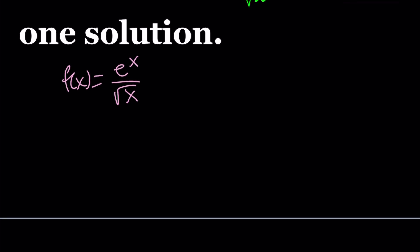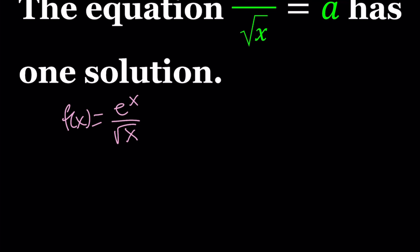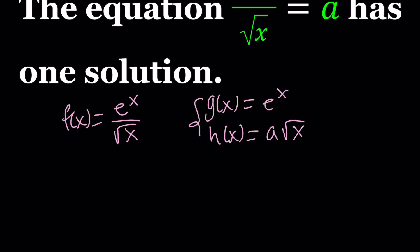Think about what the graph of f(x) = e^x / √x looks like and what its domain is. By setting g(x) = e^x equal to h(x) = a√x we get the same equation. The difference is that in the second case x can be zero, whereas with the first formulation zero is not in the domain. Since e^0 cannot be zero, x = 0 is not actually a solution in either case — that's the only difference.